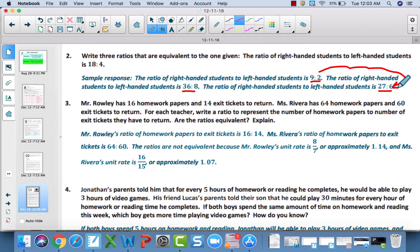Number three. Mr. Rowley's ratio of homework paper to exit tickets is 16 to 14. Mrs. Rivera's is 64 to 60. Now, the ratios are not equivalent, and one way to determine this is because their unit rates are not equivalent. Another way is if you're trying to get from 16 to 64, you can find that scale factor. What do you need to multiply 16 by to get to 64? Which in this case is 4. 16 times 4 gets 64, but 14 times 4 does not get 60. So because you have to multiply by two different scale factors, they're not equivalent. But another way is just to compare their unit rates. Their unit rates are not equivalent. Therefore, the ratios are not equivalent.